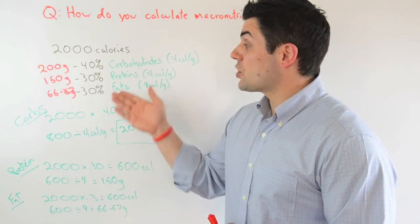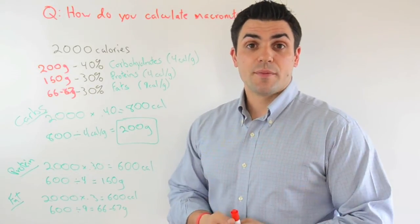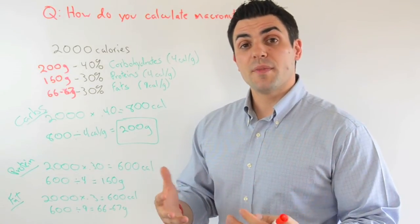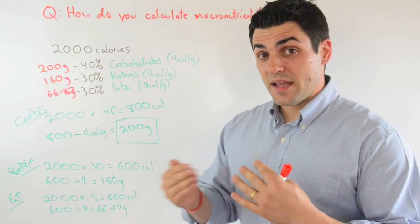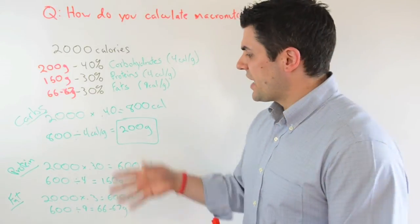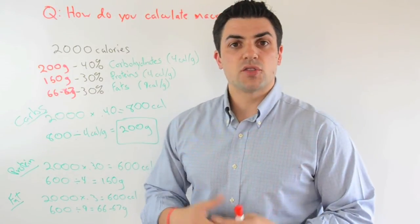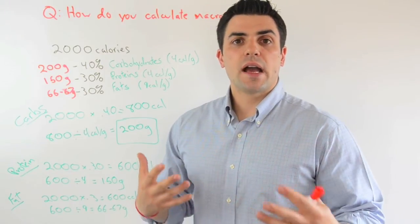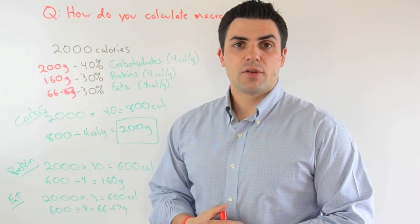And I recommend you start with 40, 30, 30, and then you adjust from there. And again, if you want more information on exactly how to make those specific adjustments, and some more detail about this whole process in general, you can check out Your Naked Nutrition Guide at microcell.com.